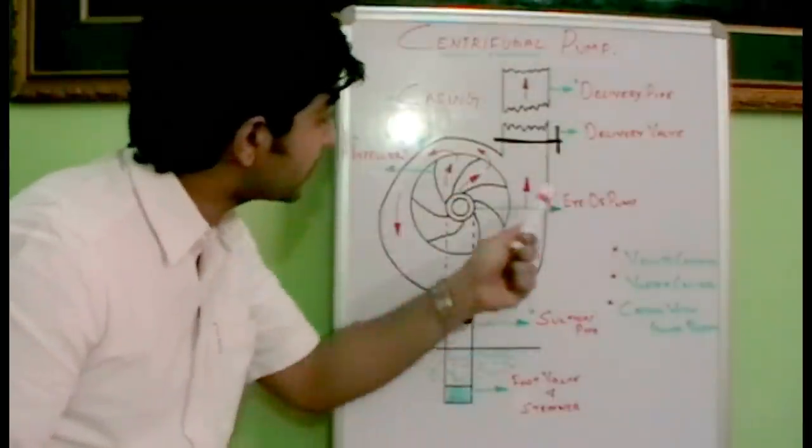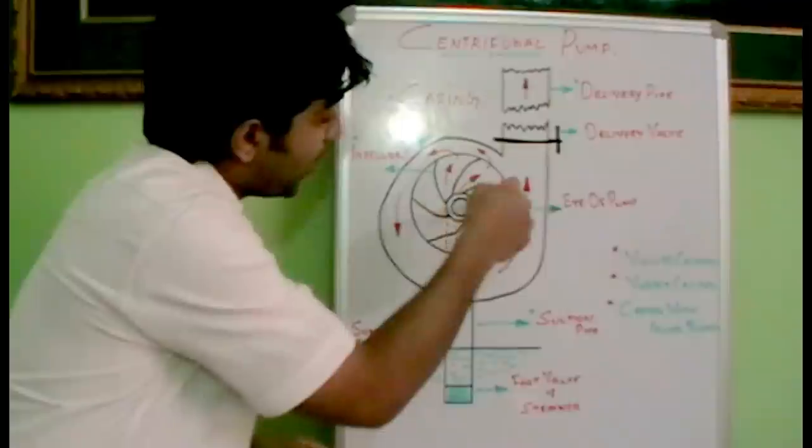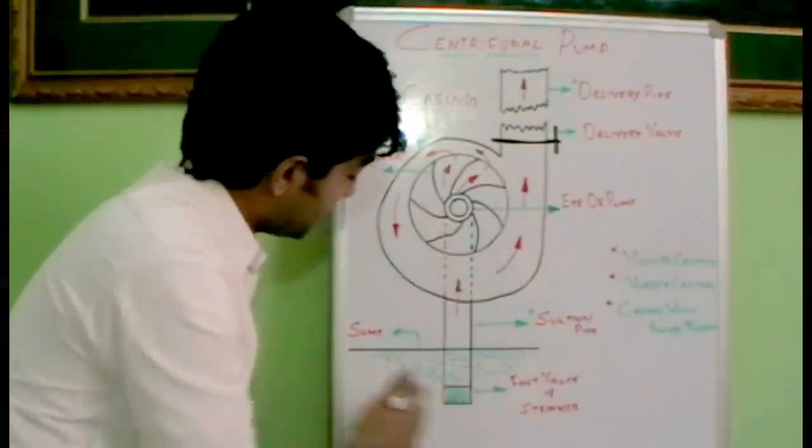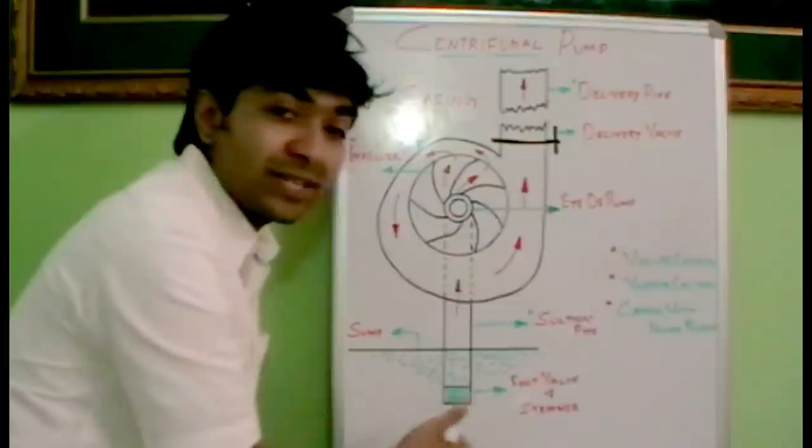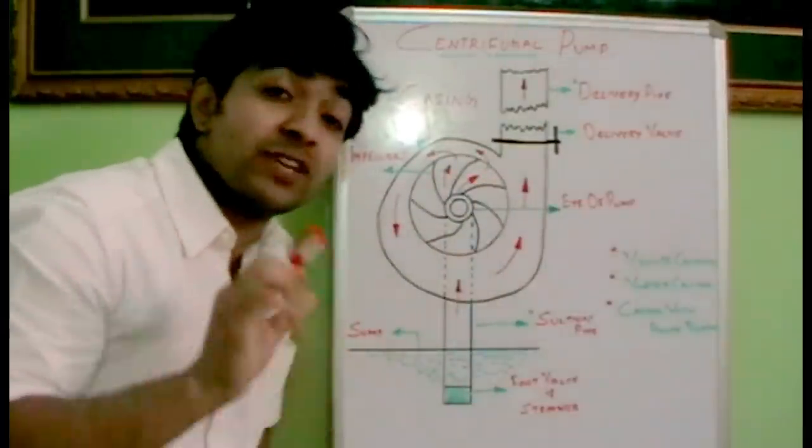This is the casing which is one part of the centrifugal pump. And the other is the impeller with the vanes over here, the center one, the heart of the centrifugal pump. And we have a suction pipe which is immersed towards the sump with foot valve and strainer and the delivery pipe. These are the four main components of a centrifugal pump.